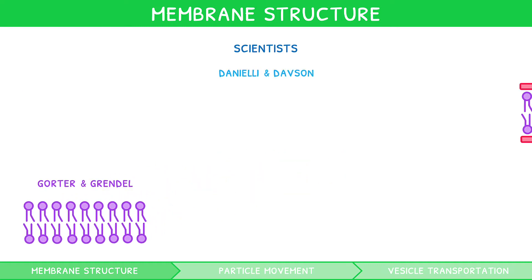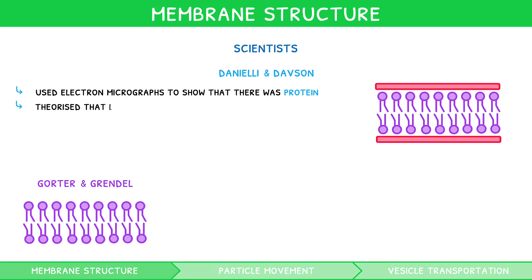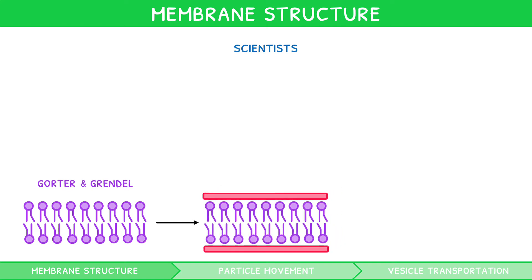Daniele and Davson then used electron micrographs to show that there was protein in the membrane. They used this to theorise that this lipid bilayer must have a protein layer outside, covering the surface to hold the lipids in place. Their model was known as the tram-track model, for obvious reasons.